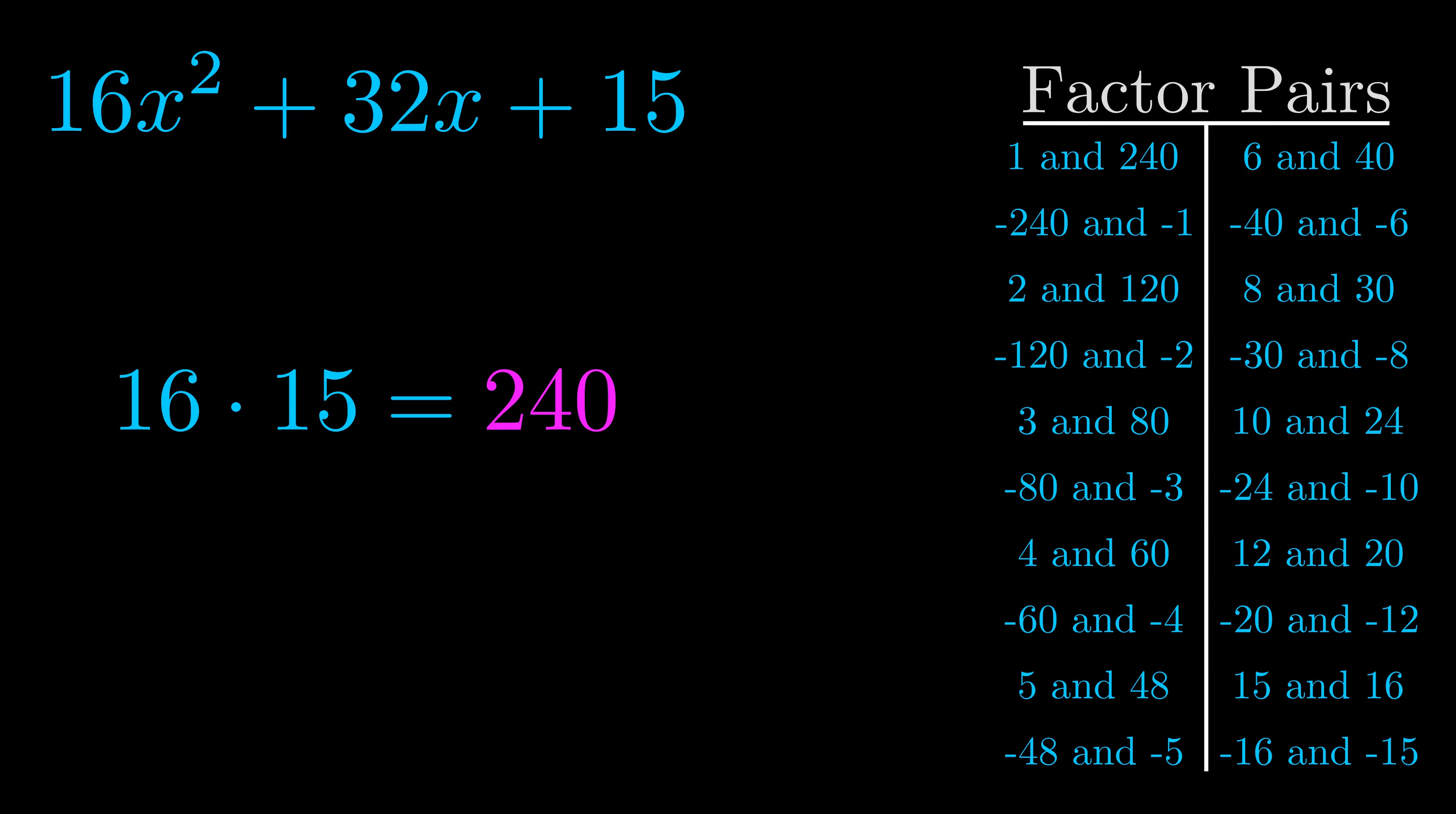The b value is the coefficient on the x term. That's the middle term, the one that we haven't done anything with yet. And really this is the only factor pair that we need.